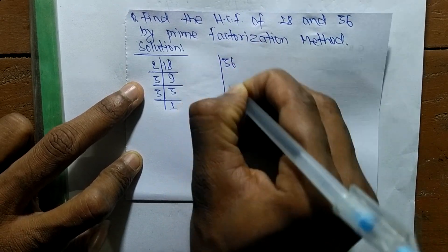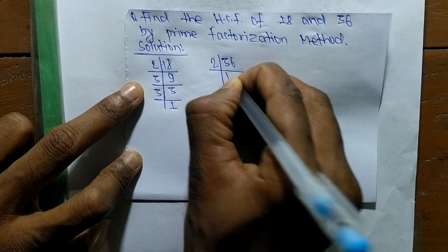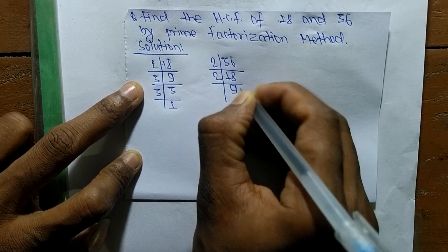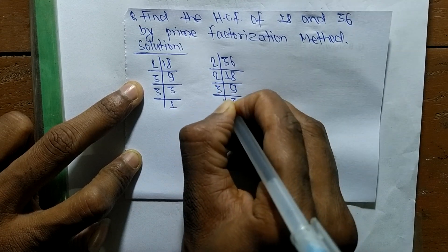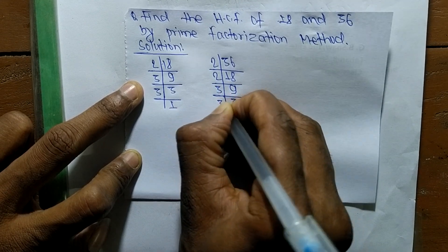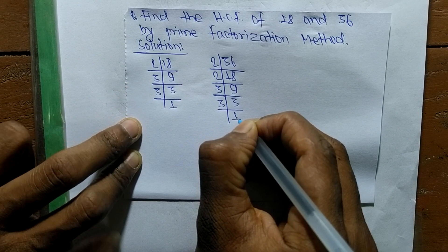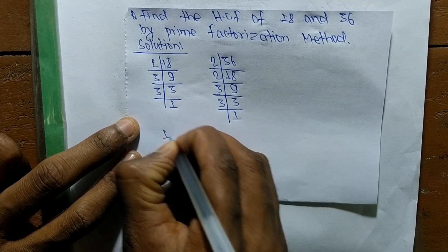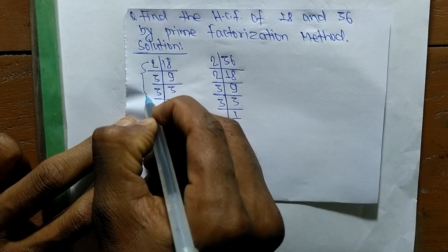In the same way, the prime factors of 36 are: 2 times 18 means 36, 2 times 9 means 18, 3 times 3 means 9, and 3 times 1 means 3. So from these prime factors we can write 18 is equal to...